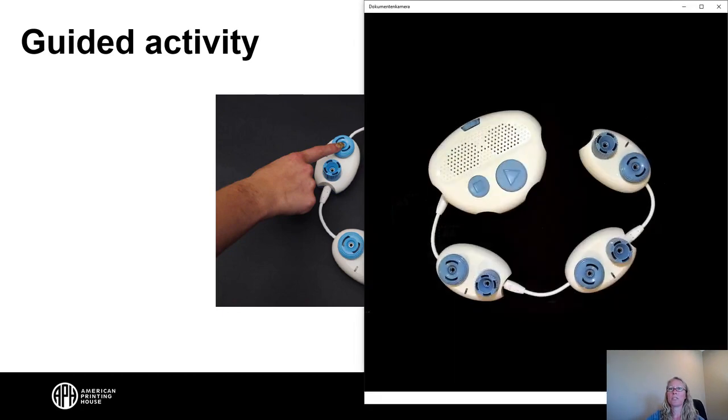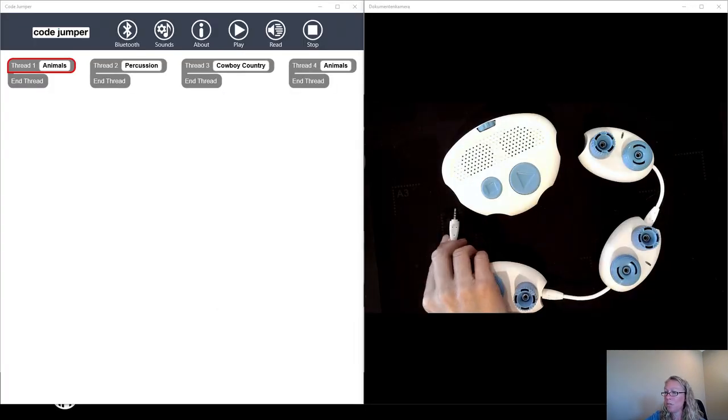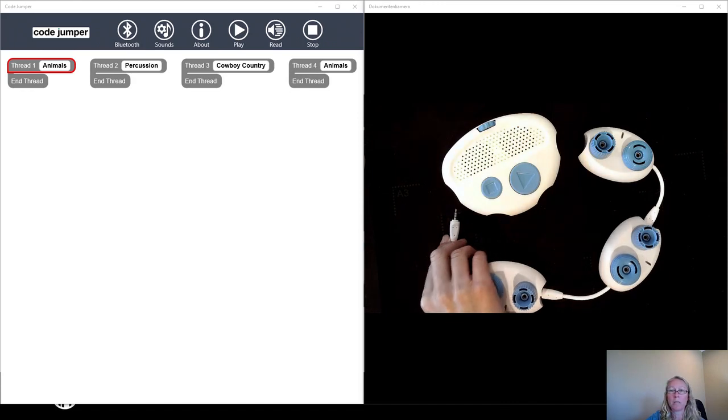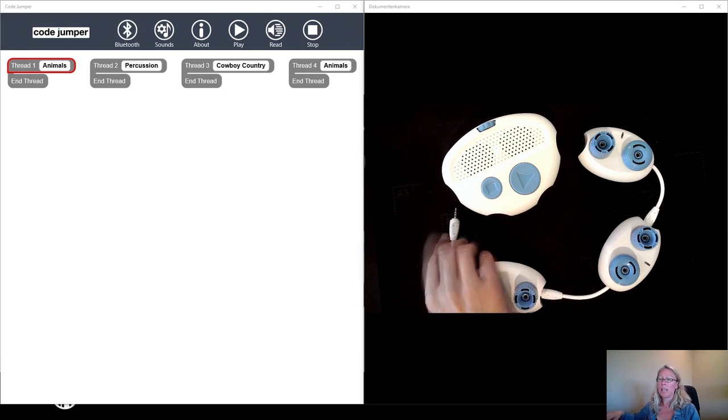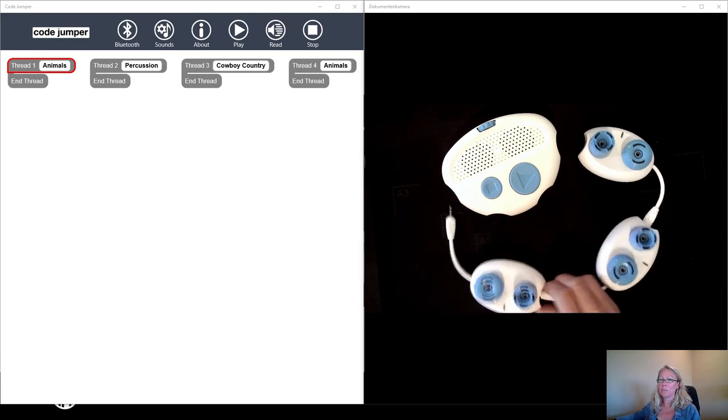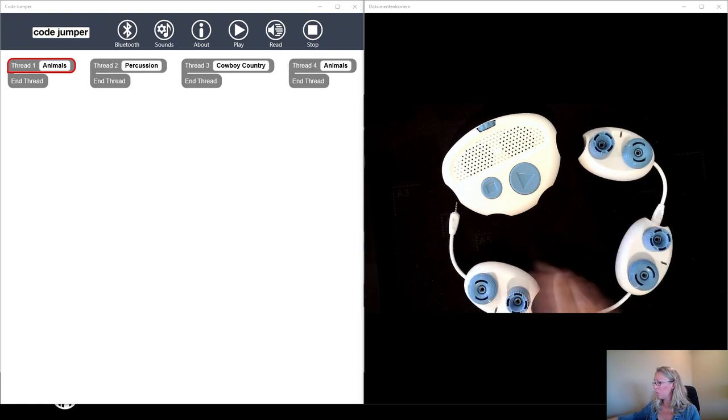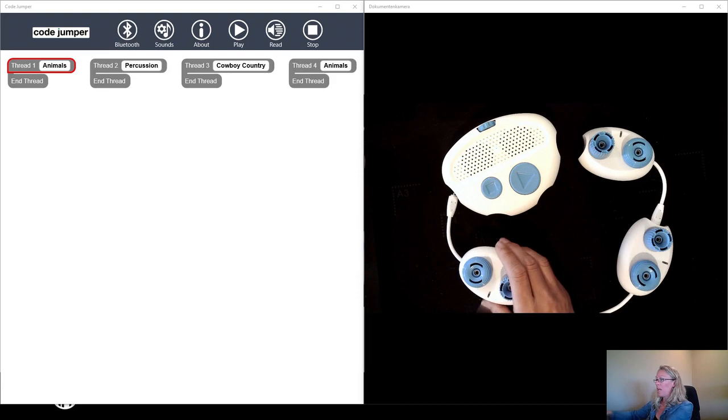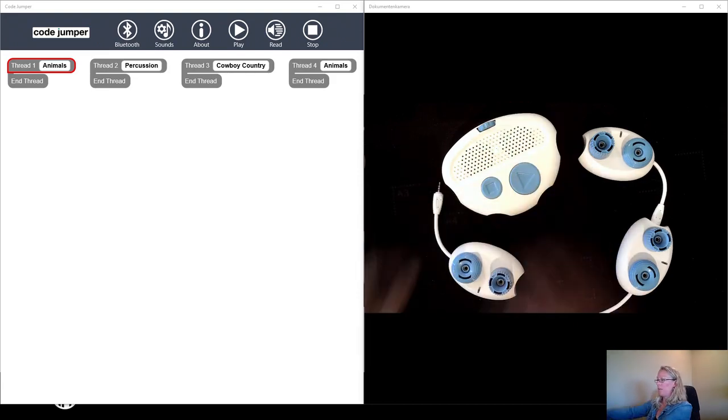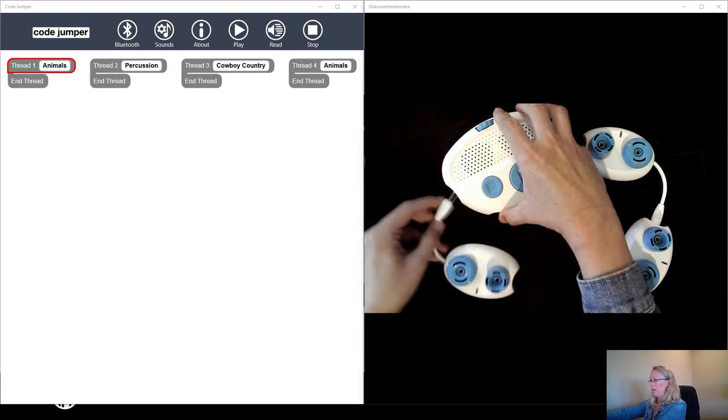So I'm going to switch my camera now to show the Code Jumper kit on my document camera and on the left hand side is the actual app. I have the sound set for thread one set to animals and I'm going to walk my students through plugging in one play pod. First identifying the play pod and then plugging it in and then plugging it into thread one.